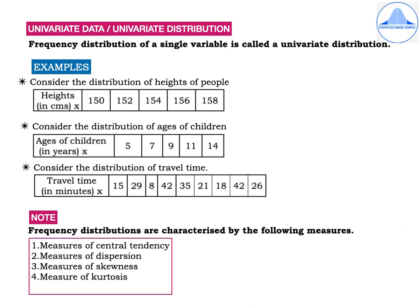Since we have data regarding only one variable which is heights, it is an example for univariate data.